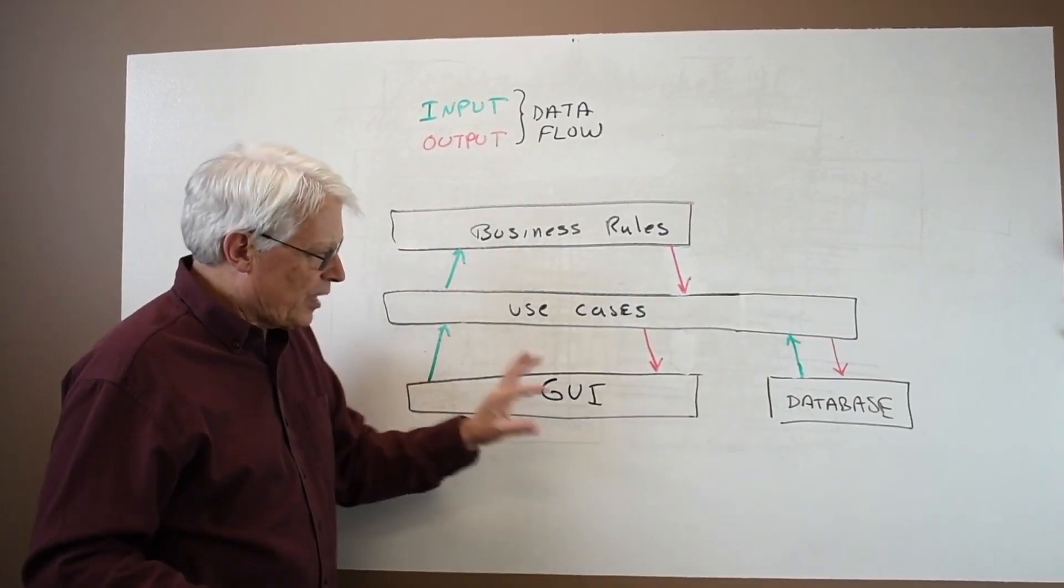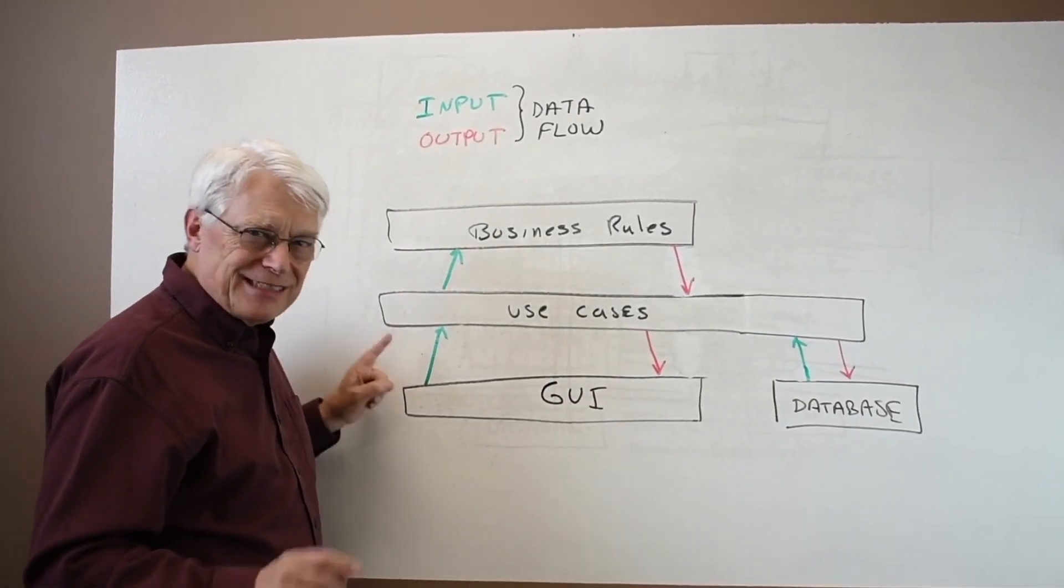This is a data flow diagram. These arrows are data flows.